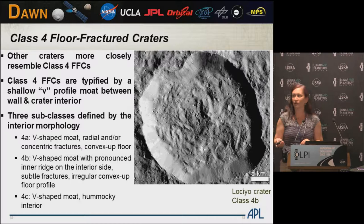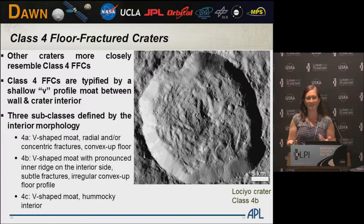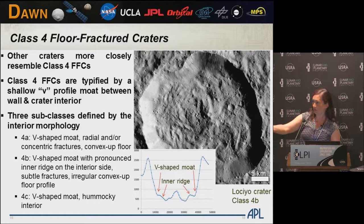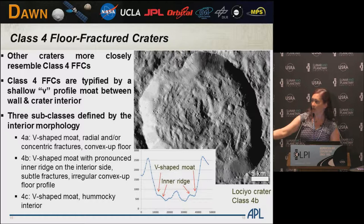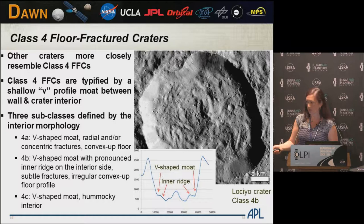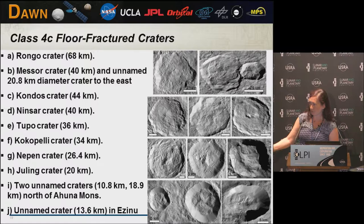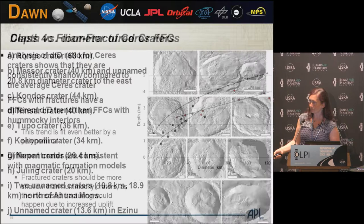The other type of floor-fractured crater we observe on Ceres are class four floor-fractured craters. These do not have clear crisp fracturing — if you looked at this, you wouldn't necessarily say it's fractured. But class four fractures are typified by a shallow V-shaped profile. Here is a topographic profile across Lokeo crater: you can see this V-shaped profile and a moat on the outside with some doming and an inner ridge. This is typical of a type four-B class four crater on the moon. There is also class four-C, which has the V-shaped moat and a very hummocky interior. Lokeo has subtle fractures — not really crisp, but they are fractures. The other class four craters are mostly hummocky material, but they all have the V-shaped moat.